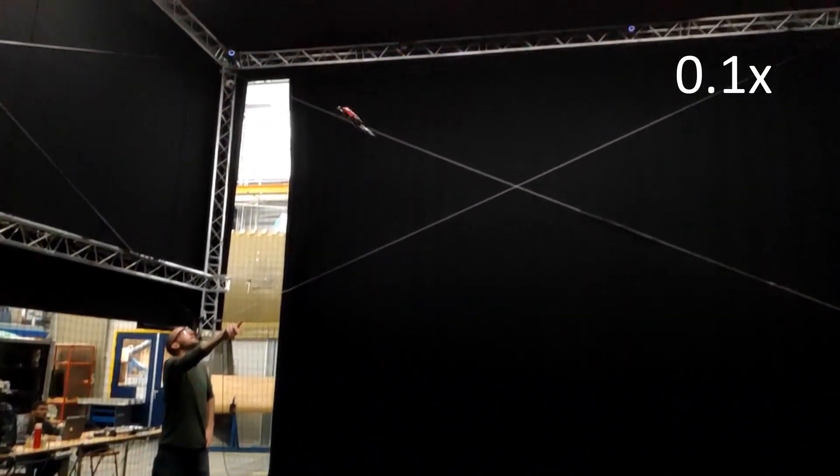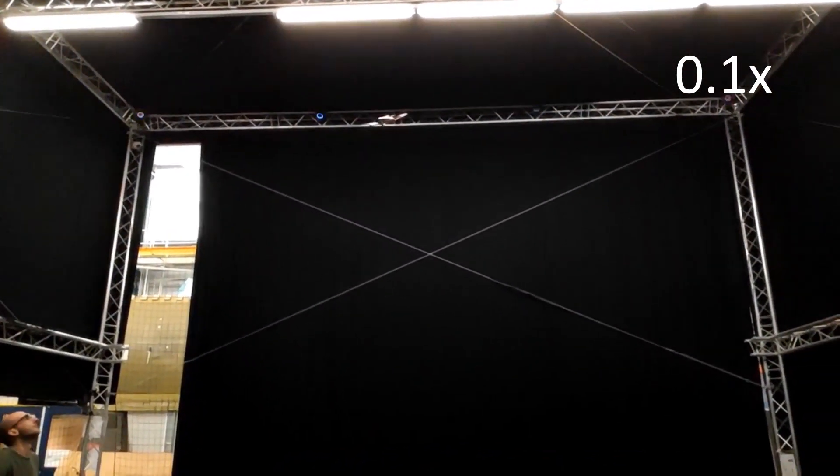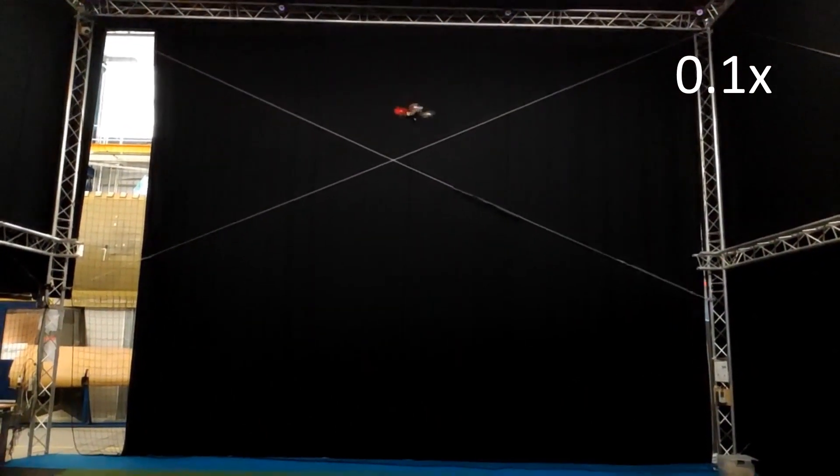To create the random initial condition, we toss the damaged drone into the air. With our controller, the drone could finally recover to a stable state with complete failure of the rotor.